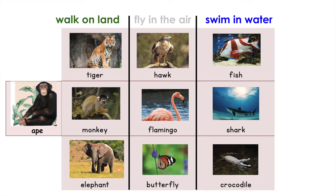For the animals that walk on land, from top to bottom we have tiger, monkey, elephant, and we also added ape. Then in the middle we have the animals that fly in the air: hawk, flamingo, and butterfly. Finally, animals that swim in water: fish, shark, and crocodile. You will not need to write any of these words on the quiz. All you need to do is recognize them — when you see the word, you can read it and know what animal it is. On the quiz you will just need to sort them, meaning put them into the right group.